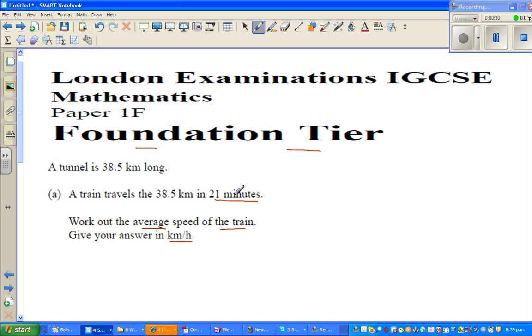This is kilometers, this is in minutes, but the question wants this in kilometers per hour. So first you need to change the minutes into hours. 21 minutes - one hour has 60 minutes. So to change this into hours, this is 21 out of 60 hours.